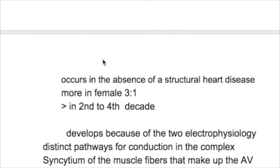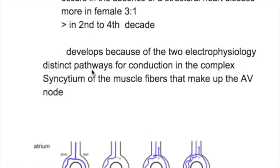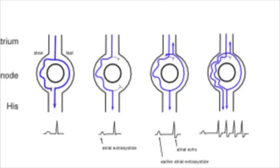What is the cause of AVNRT? It occurs in the absence of structural heart disease. It develops because of two electrophysiologically distinct pathways for conduction, slow and fast, in the complex syncytium of muscle fibers that make up the AV node.